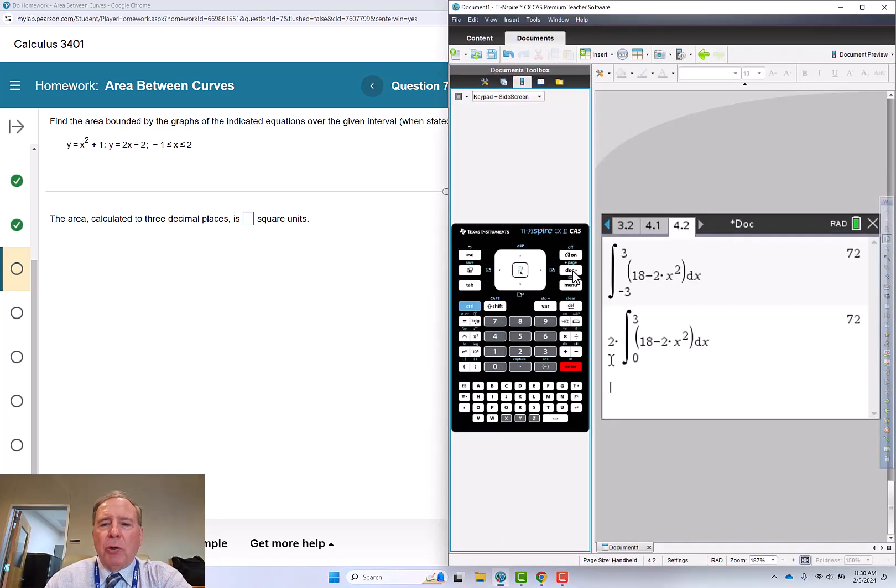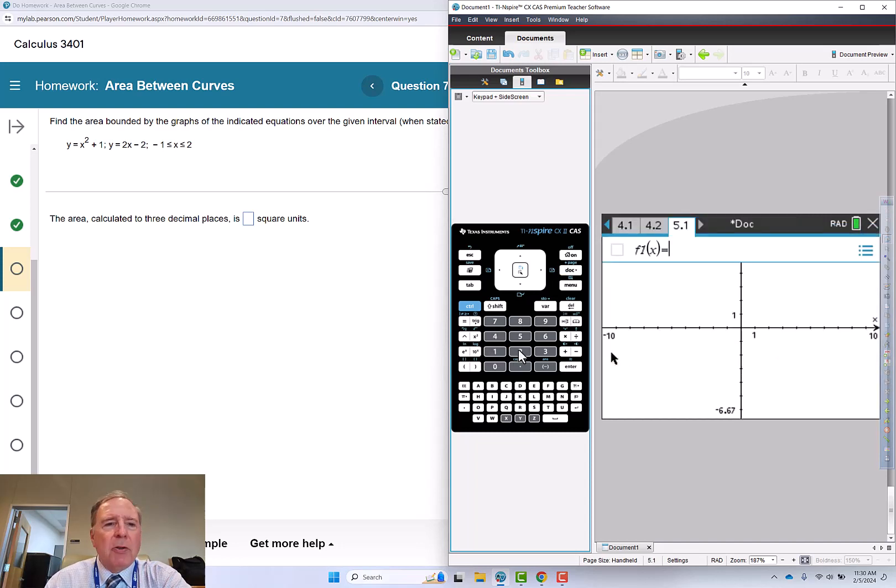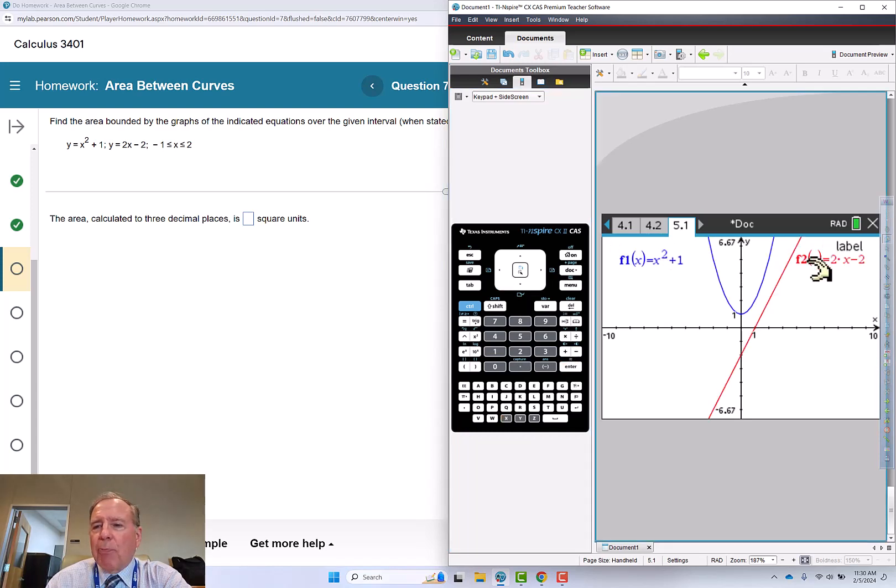I'm going to start a new problem. Four for graph, x squared plus one, down arrow, immediately then 2x minus 2. We do have the upper function being the parabola and we're going from negative 1 to positive 2.